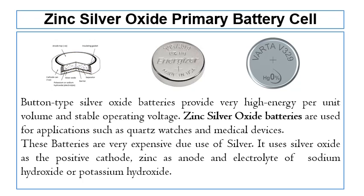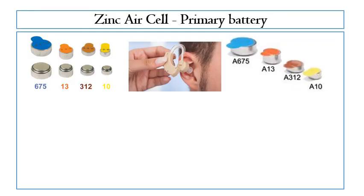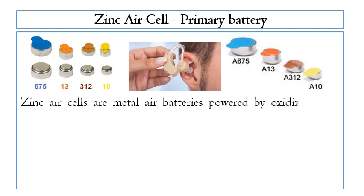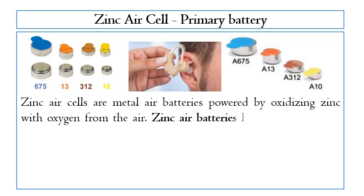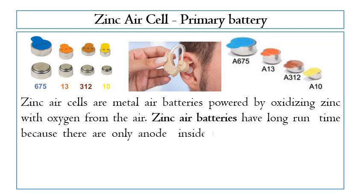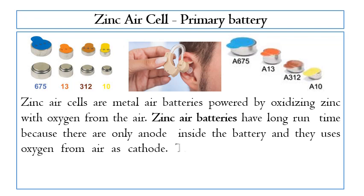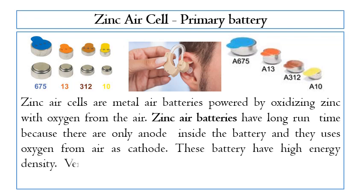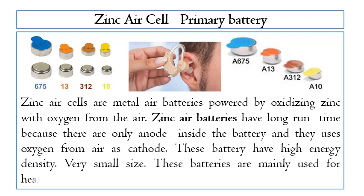Zinc air cell primary batteries are metal-air batteries powered by oxidizing zinc with oxygen from air. Zinc air batteries have a long run time because there is only an anode inside the battery and they use oxygen from air as the cathode. These batteries have high energy density and a very small size. They are mainly used for hearing aids.